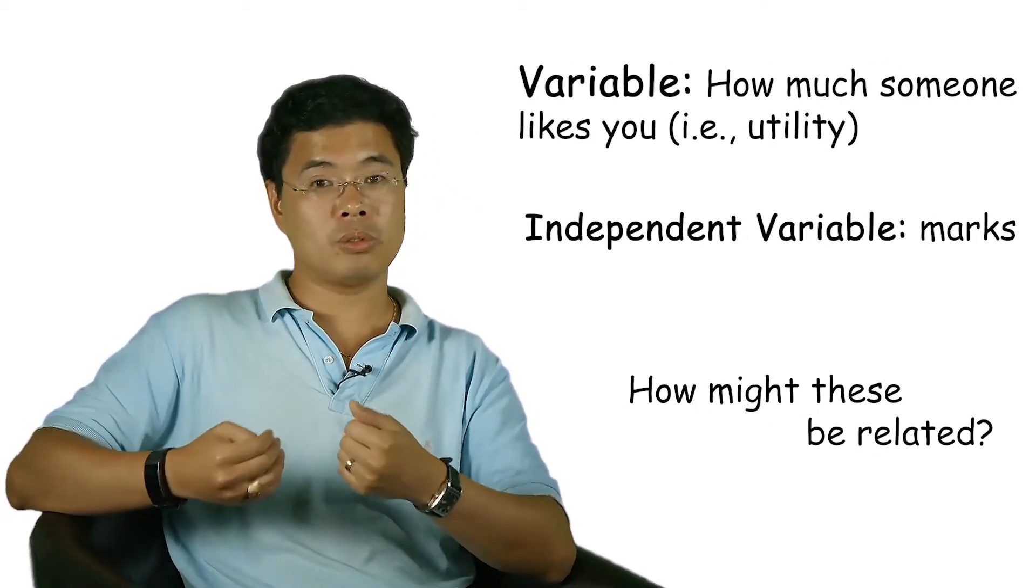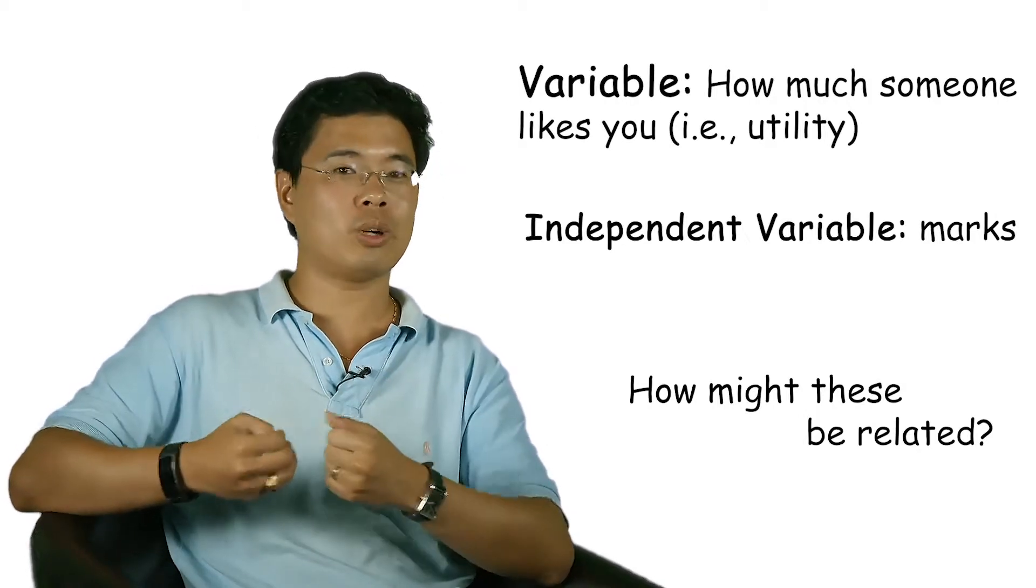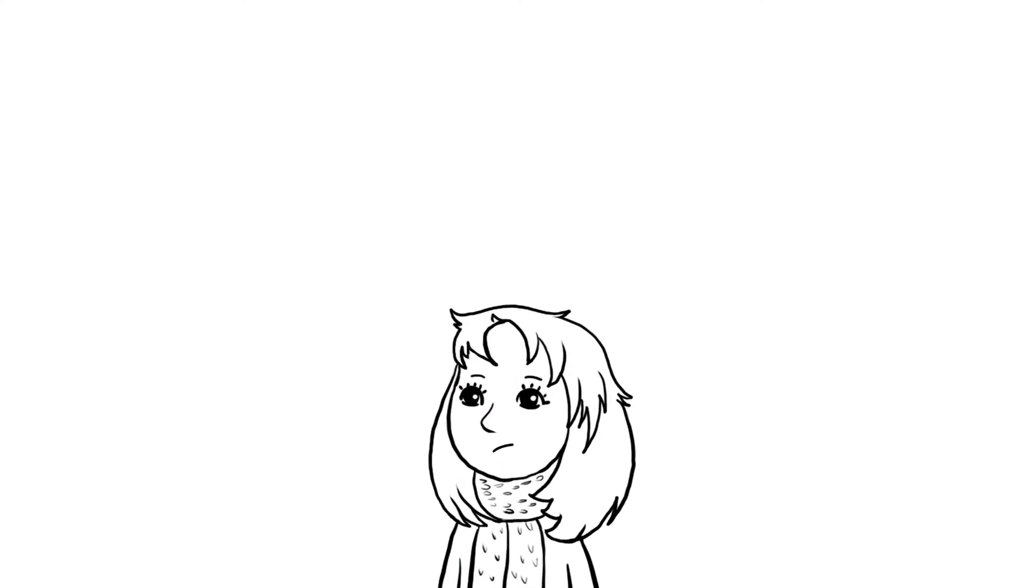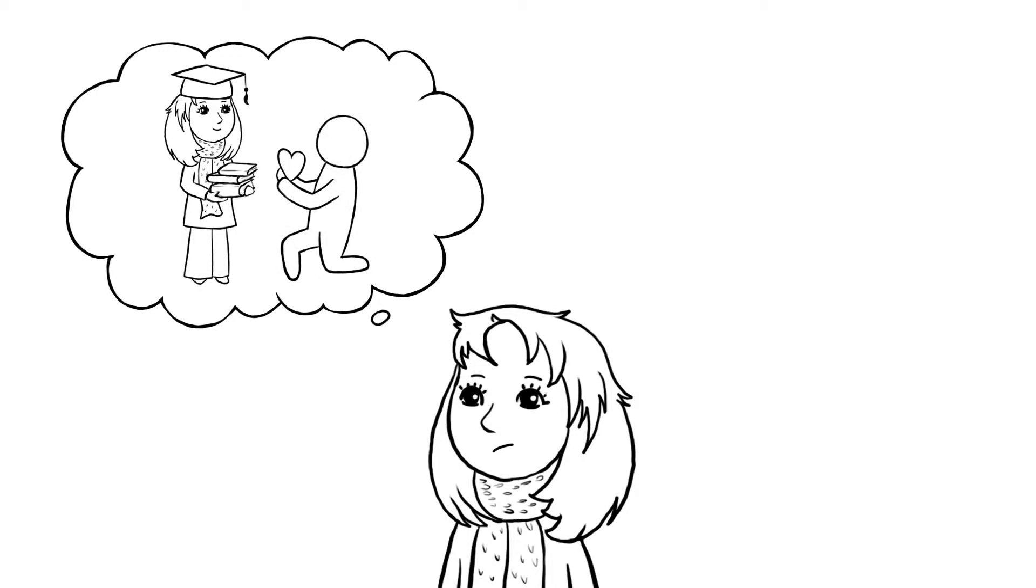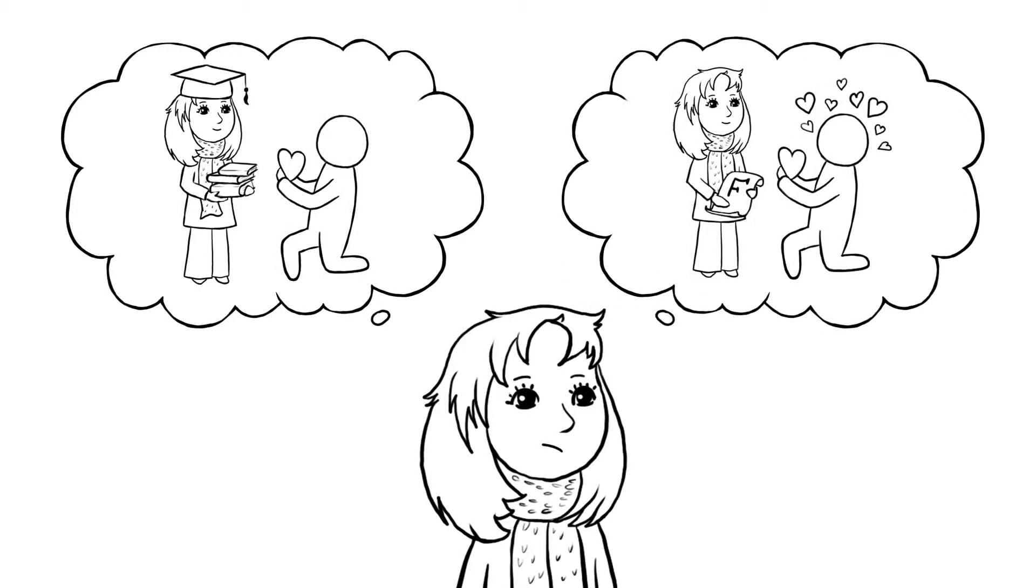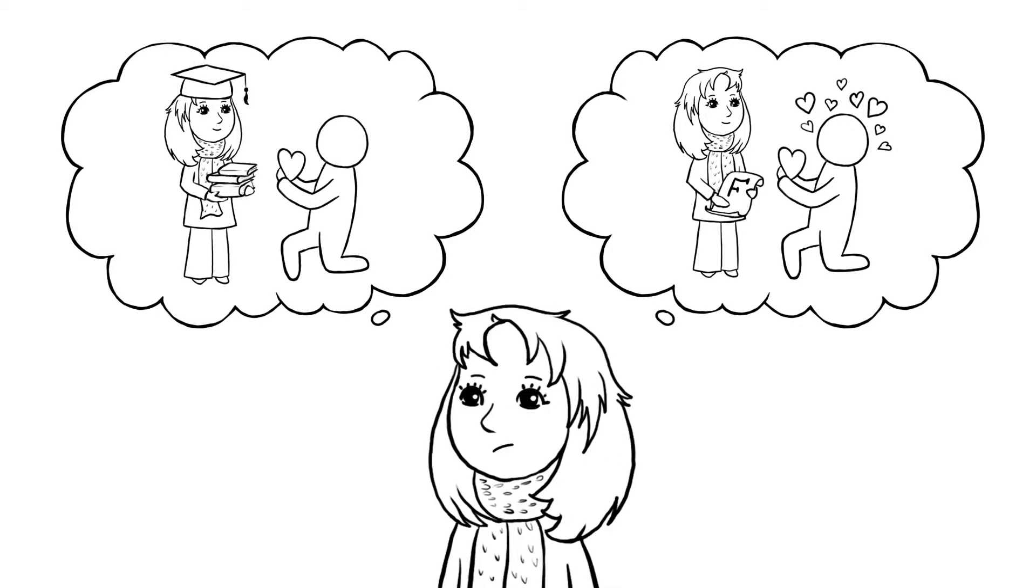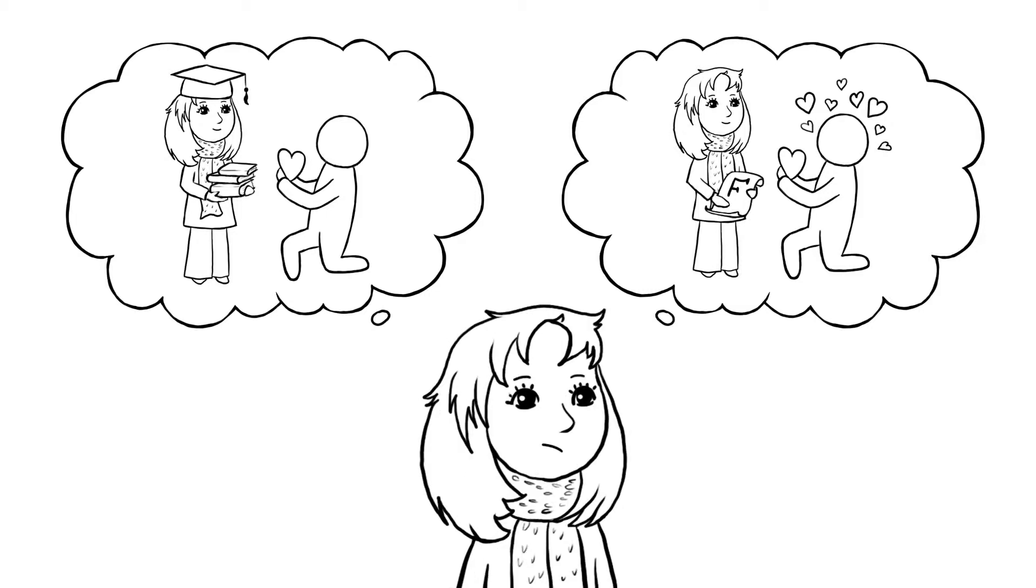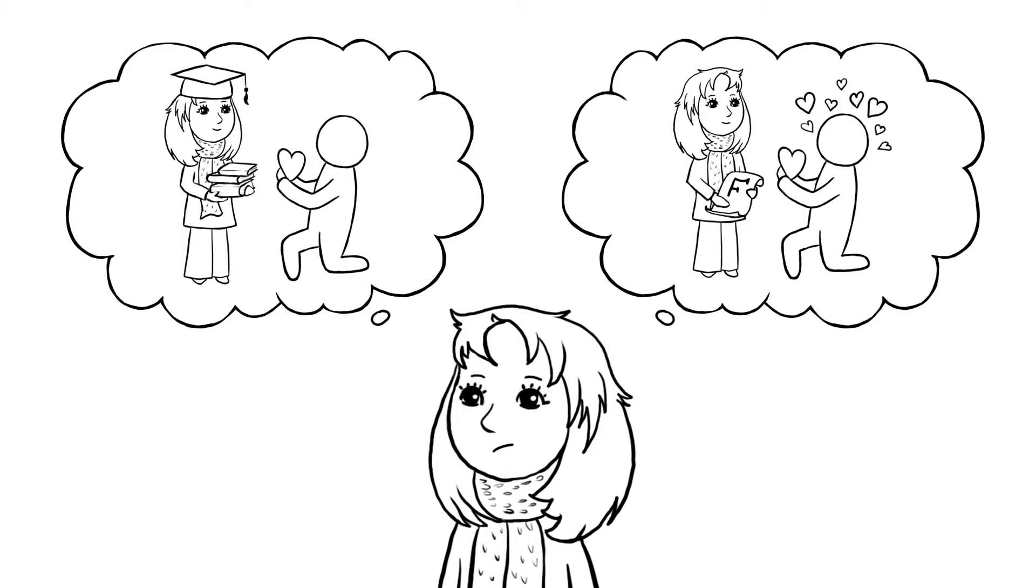There are some people that really like smart people. What's that relationship? Is that a negative correlation or a positive correlation? That's the question. Should you be putting more effort into getting better marks to actually do better and have that person like you more?